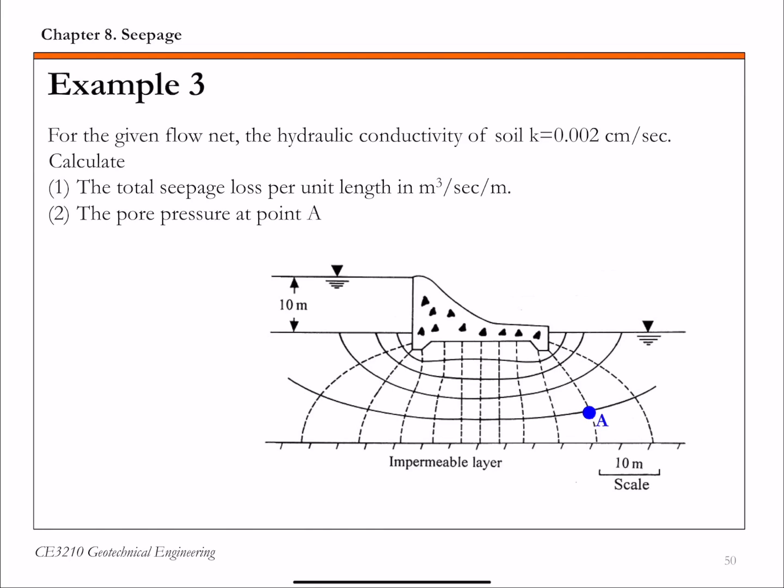For example 3 of this chapter, we're given a flow net around and underneath this hydraulic structure, and we know the hydraulic conductivity of soil.